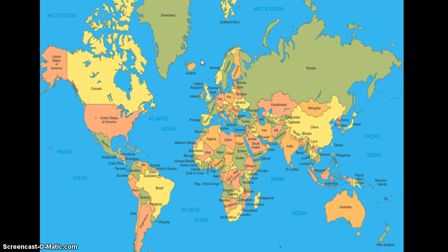Every country has a different economy. They are all different. In different places they make different things, they buy different things, prices are different — it's completely different. So there is a bit of geography to it. There are a lot of things that connect with economics, but just envision a different market or store in every country that sells and makes different things.